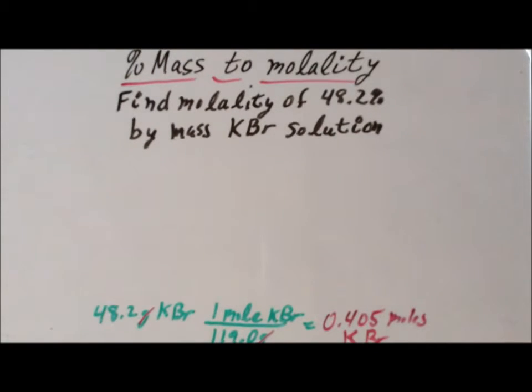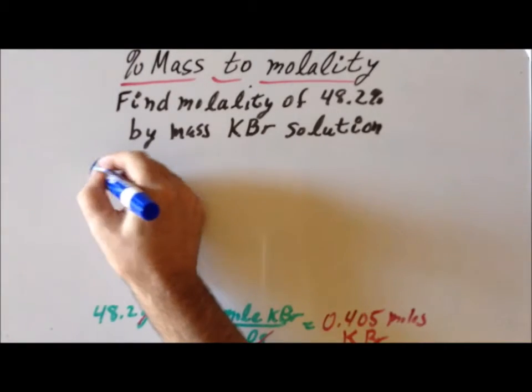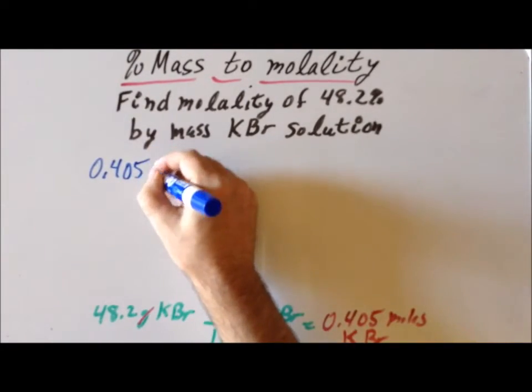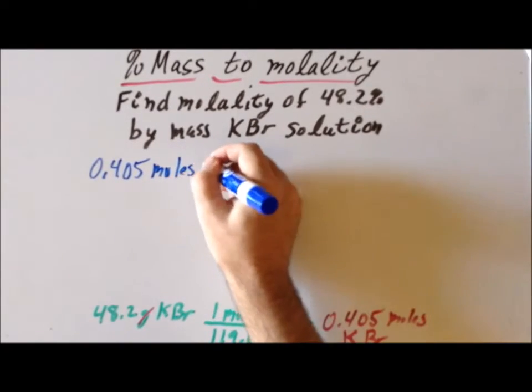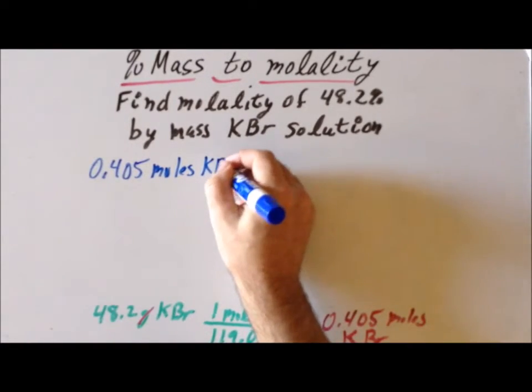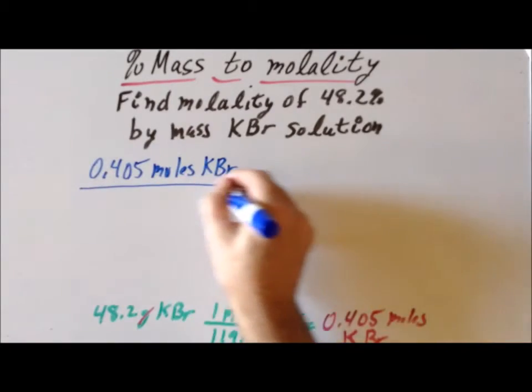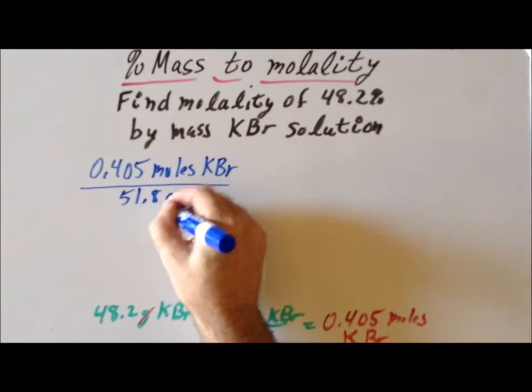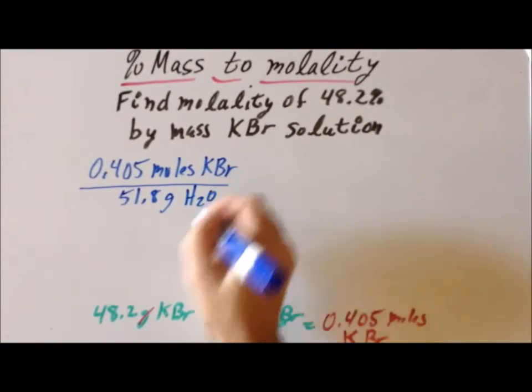We now have the two pieces of information that we need to actually calculate the molality. We know that we have 0.405 moles of KBR, which is our solute, and it's dissolved in a mass of 51.8 grams of H2O, which is our solvent.